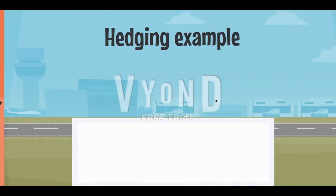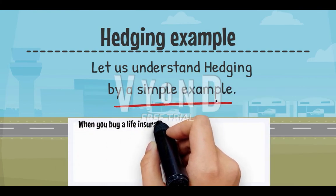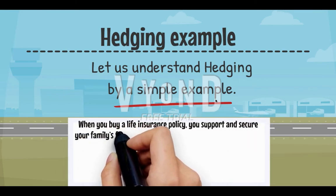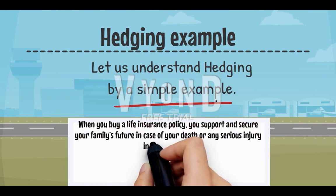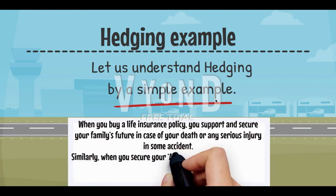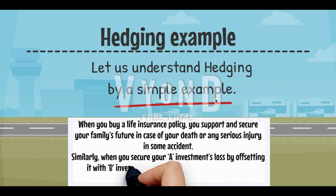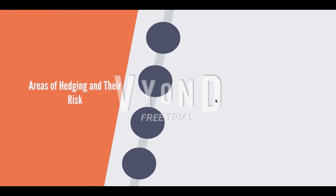Let us understand hedging by a simple example. When you buy a life insurance policy, you support and secure your family's future in case of your death or any serious injury in some accident. Similarly, when you secure investment A's loss by offsetting it with investment B's profit, that is known as hedging.